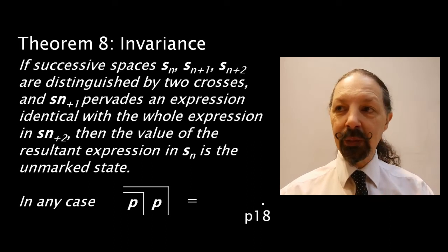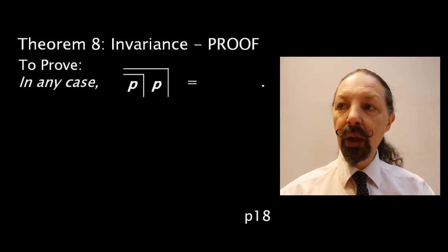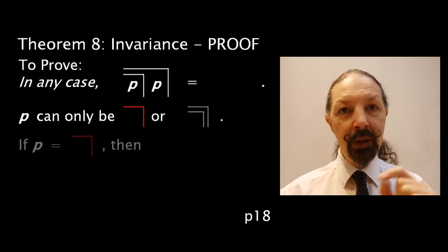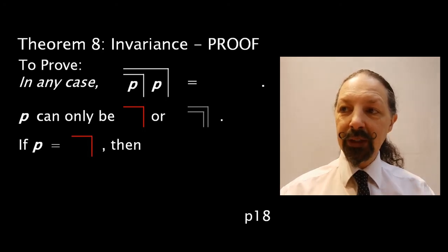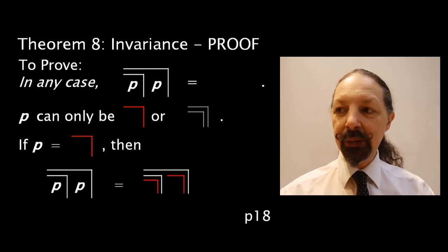That's what he says. Let's see if it's true. Let's see if we can prove it. Here's the proof. We know that p can only be marked or unmarked. So, we're going to substitute each value in turn into the expression and see what happens. Let's do the marked state first.